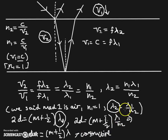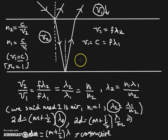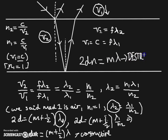Now for destructive interference — you might have guessed it's a very similar looking equation. For destructive interference it's 2dN = m·lambda. So that's destructive interference. Thank you for watching.